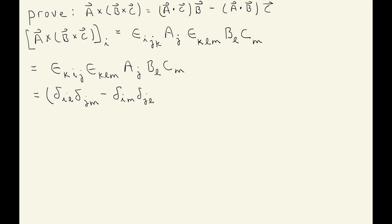So we have (delta_il * delta_jm - delta_im * delta_jl) times a_j * b_l * c_m. Now we contract the Kronecker deltas against the vector components. The index i is not contracted since we're looking at the i-th component. We replace l and m: delta_il replaces l with i, and delta_jm replaces m with j.